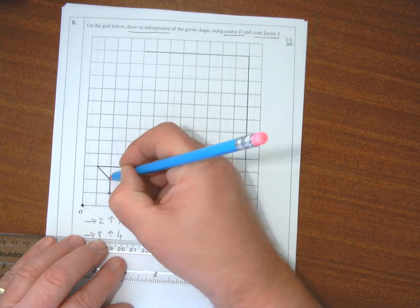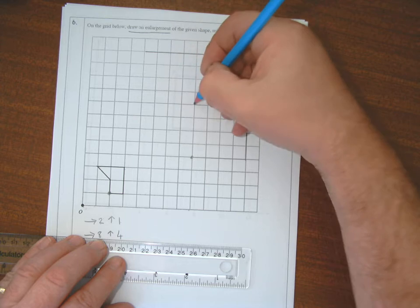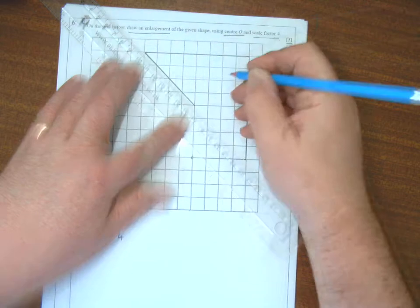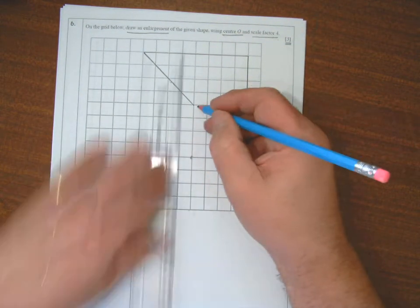This diagonal is straight corner to corner, so it's corner to corner once. So I go in four times: one, two, three, four. And finally, the last one down should be four squares down, and it is.